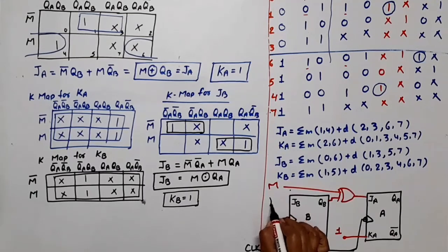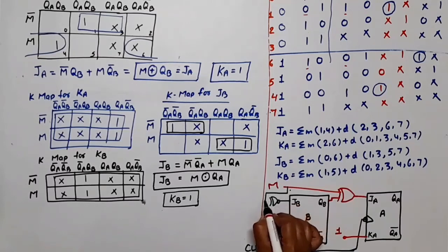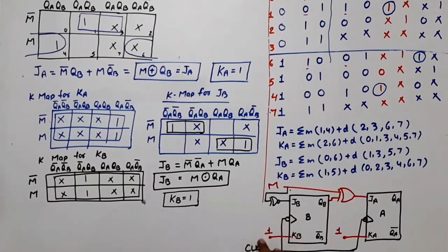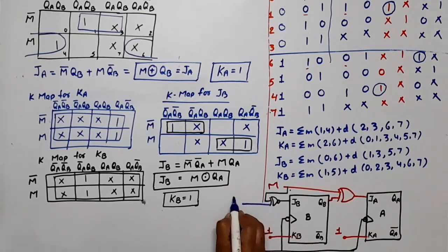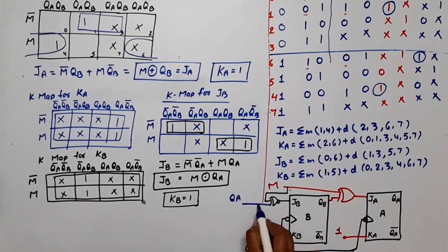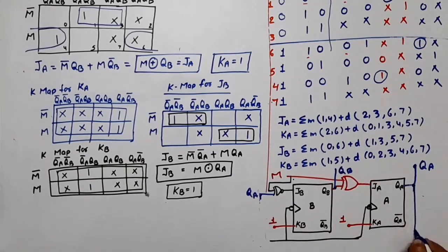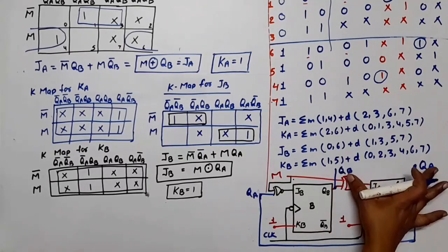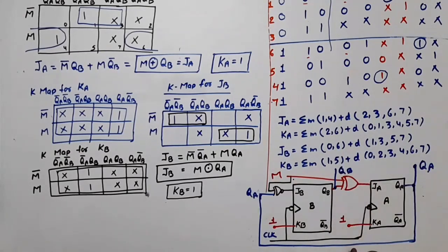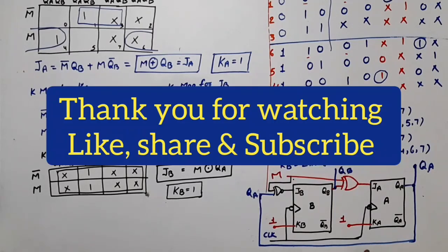The XNOR gate output connects to JB, with QA connected via feedback from the QA output of flip-flop A. QA and QB are taken from the respective flip-flop outputs as the counter outputs. This is the logic diagram of the mod 3 up-down counter.